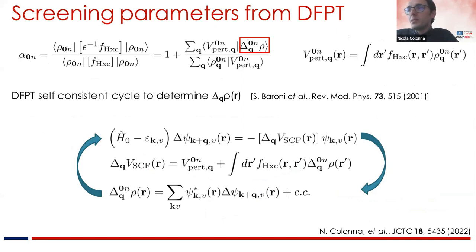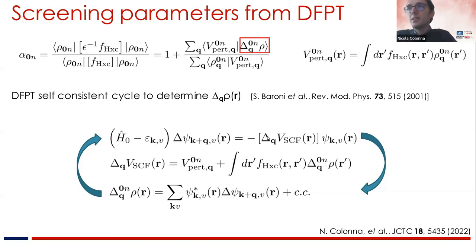This allows you to rewrite the screening coefficient as a sum over Q-points — a sampling of the Brillouin zone — times objects you can compute within a primitive cell. So you don't need the supercell anymore. This is the main advantage of this approach. The only unknown is the density response, which you solve using density functional perturbation theory (DFPT). The loop is pretty much the same as in a standard DFT SCF calculation, but now you converge the variation of the density rather than the density itself.